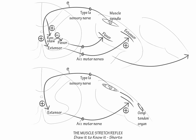Next, show that a type 1b fiber projects from the Golgi tendon organ to the Renshaw interneuron. Now show an inhibitory fiber projecting from the interneuron to the extensor motor neuron.